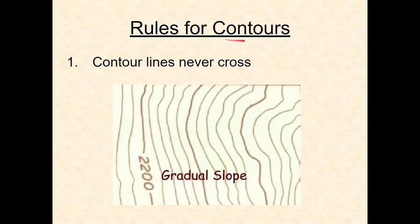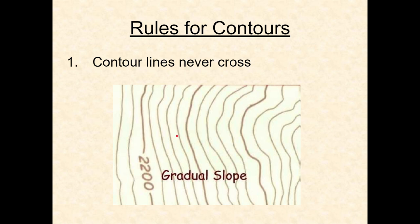Some rules for contours: number one, contour lines never cross each other, because if they crossed it wouldn't make sense. They can get really close together — which basically means you've got a sheer cliff — but they should never cross.